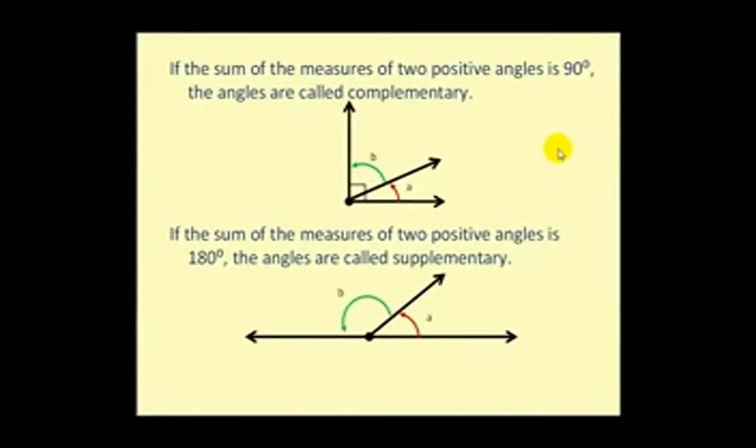Let's go ahead and take a look at complementary and supplementary angles. If the sum of the measures of two positive angles is 90 degrees, the angles are called complementary. So in this case we have the measure of angle A plus the measure of angle B equals 90 degrees.